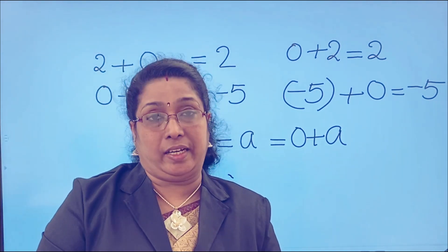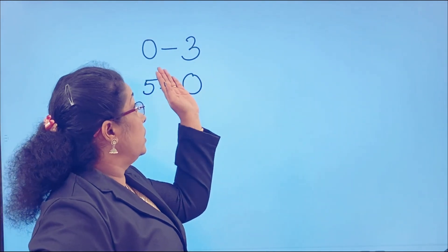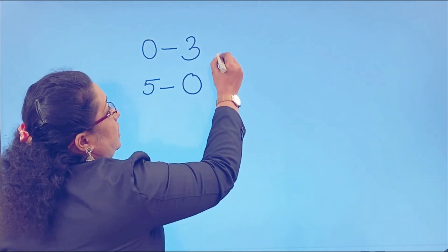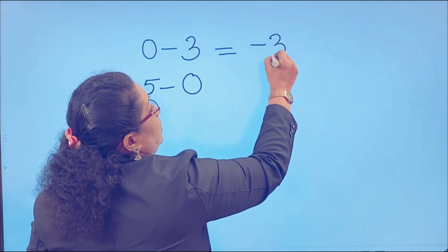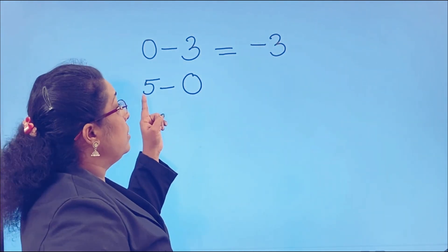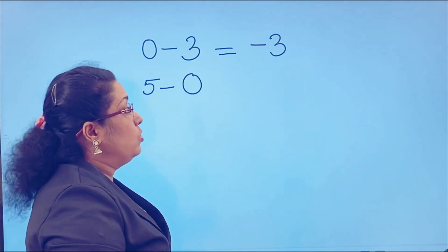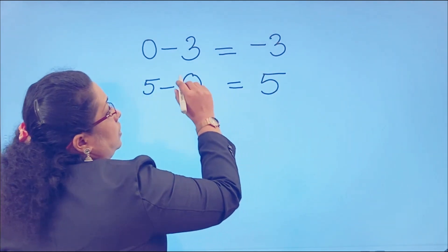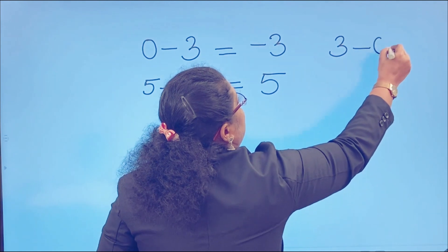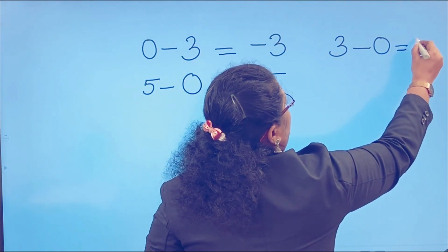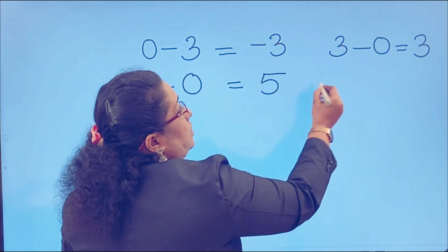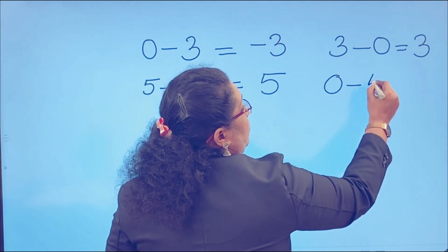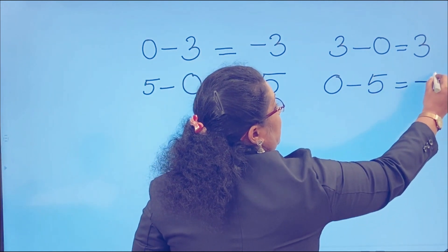Now let us move to subtraction. We can check what happens if we subtract any integer from 0. Look here: 0 minus 3, the answer is negative 3. And here, 5 minus 0, the answer is 5. Also, 0 minus 5, the answer is negative 5.